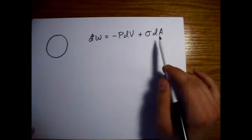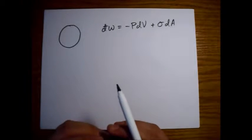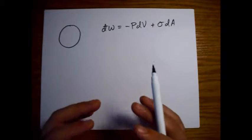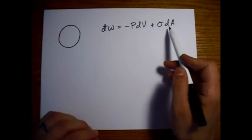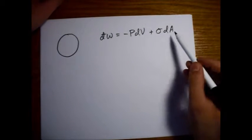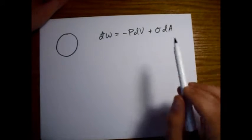So there's no minus sign here. We actually increase the energy of the system by stretching it. So we're making the area larger. So dA is positive, and we have a plus sign here.